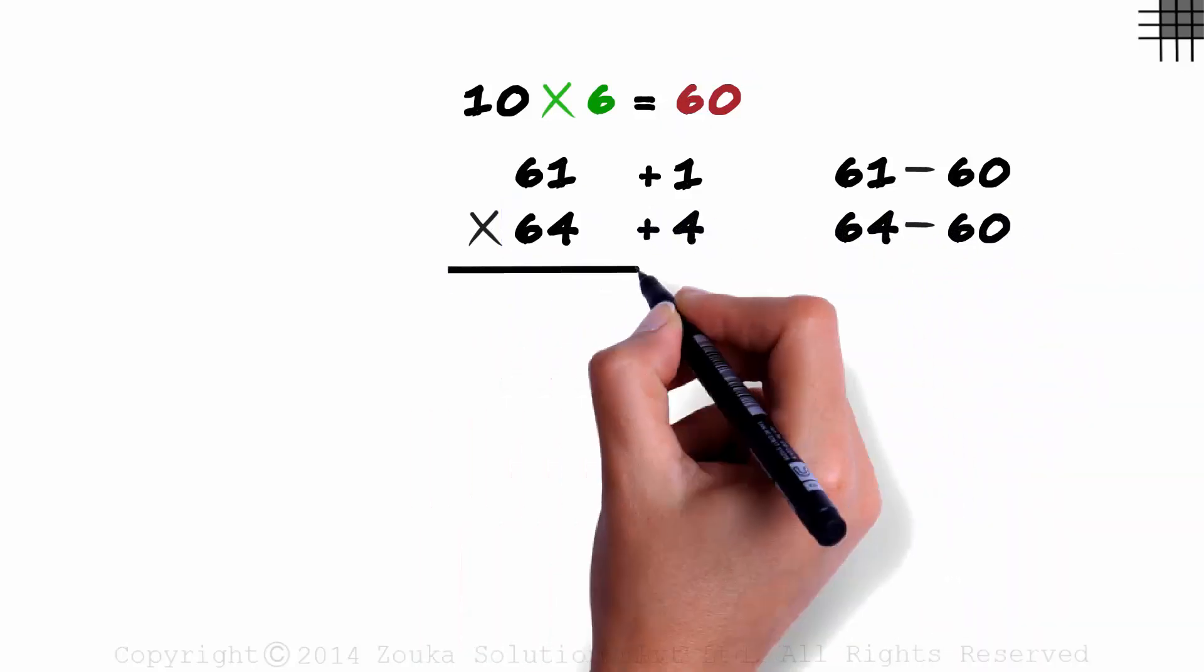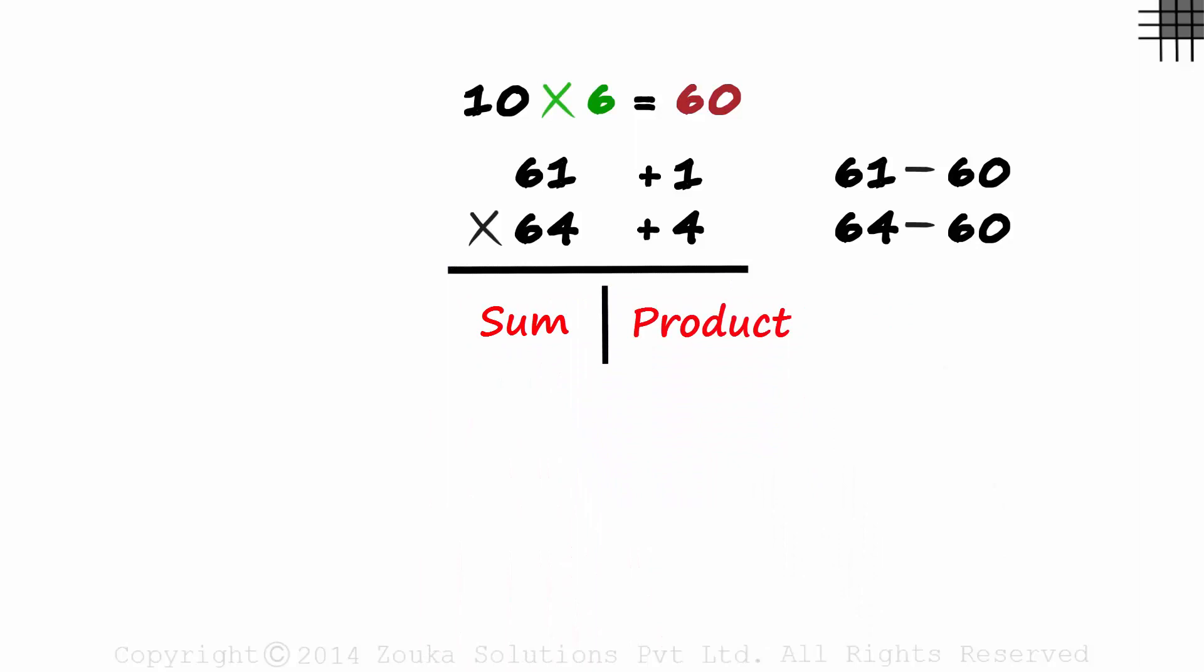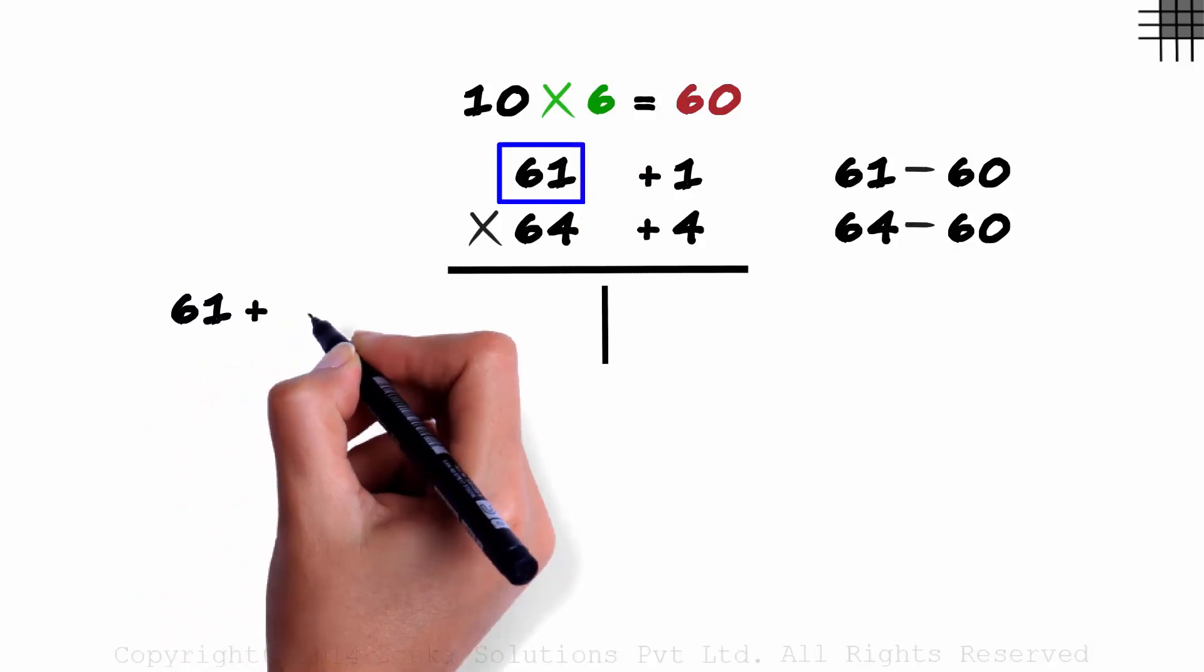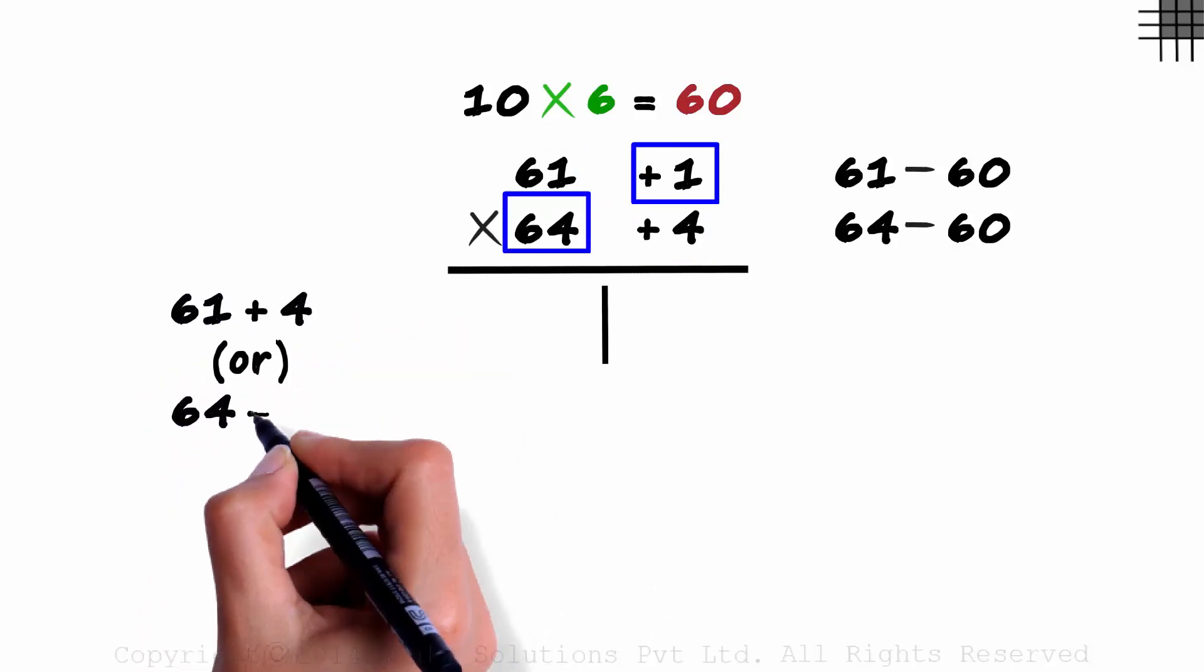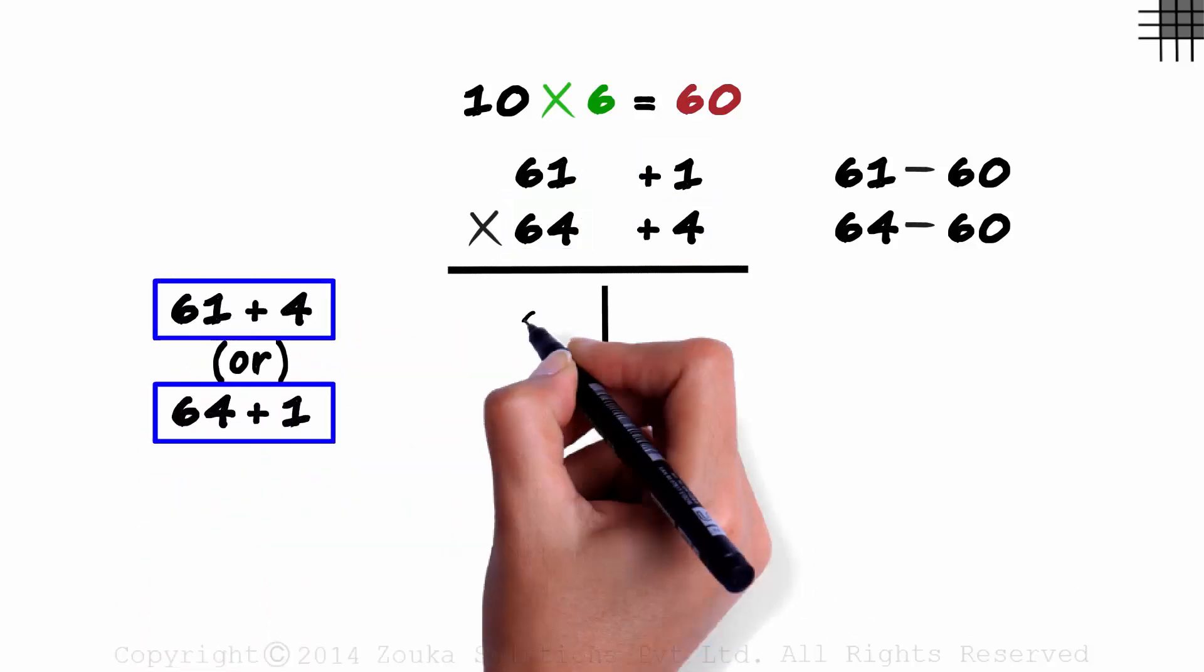The next two steps are also the same. Sum on the left and the product on the right. The sum can be any of the two diagonal numbers: 61 plus 4 or 64 plus 1. Both give us 65.